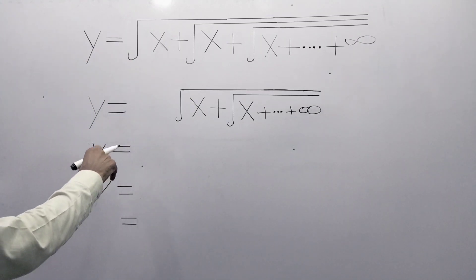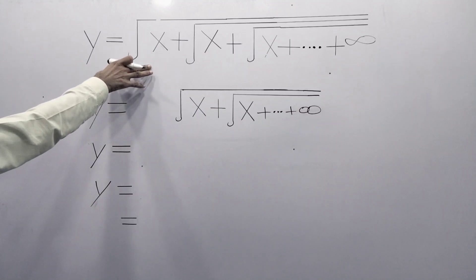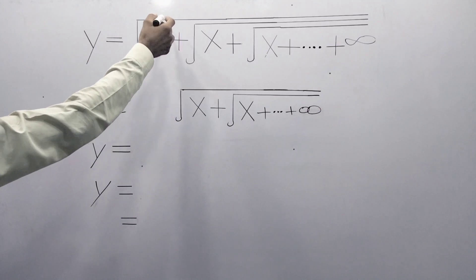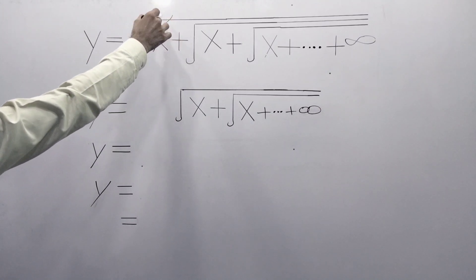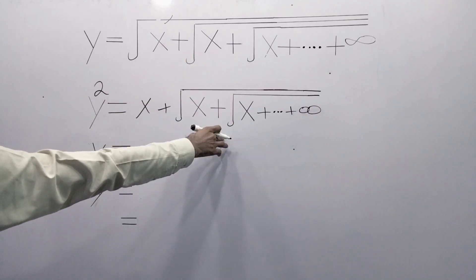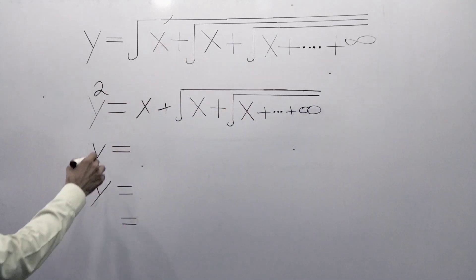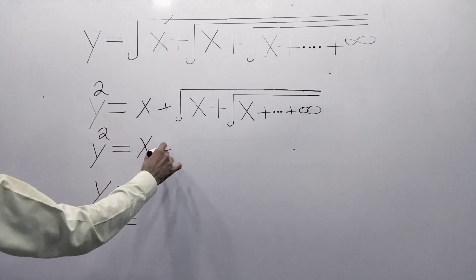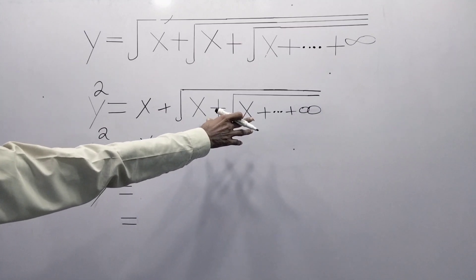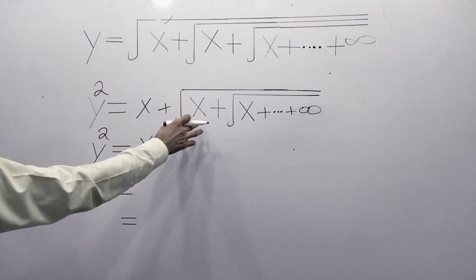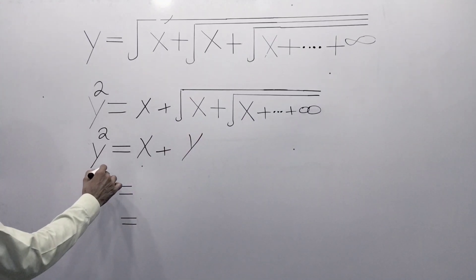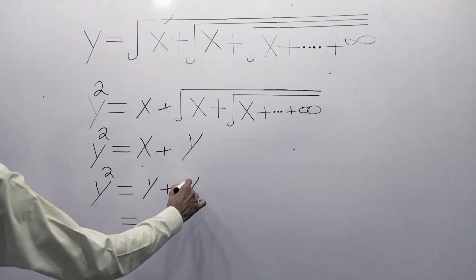First of all, we have to take square on both sides. After taking square, we will get y square equals x plus square root of x plus square root of x and so on. It is given that square root of x plus square root of x and up to infinity - this is equal to y. So replace this by y. Now y square is equal to x plus y.